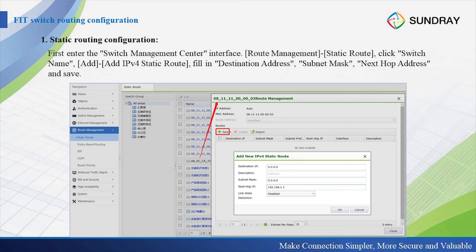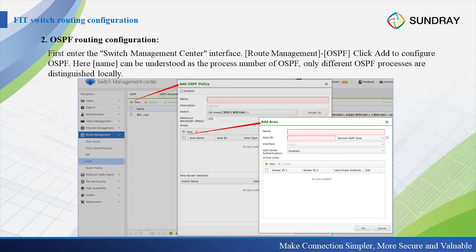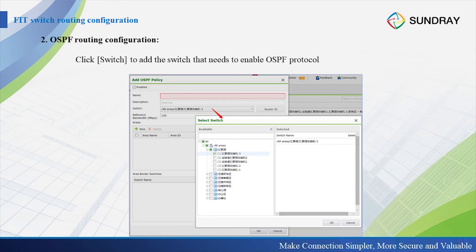For the OSPF routing configuration on the fade switch, the topology remains the same. We go to the switch management center, then route management, OSPF, and add the OSPF policy. We give it a name and choose which switch is in the OSPF area. For the areas, we need to add the area and input the area ID. For example, area 0 — we input 0 here — and area 1.